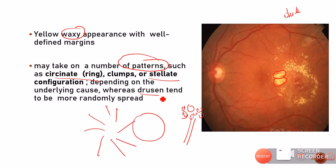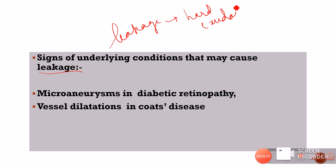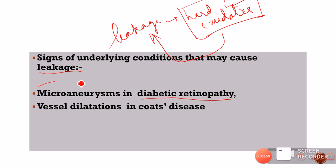Drusen, by contrast, are usually randomly spread, except for familial drusen which show a honeycomb or radial appearance. Whenever we see hard exudates, signs of the underlying condition will also be present indicating leakage. For example, in diabetic retinopathy there will be microaneurysms, and in Coats disease there will be vessel dilatations and telangiectasias.